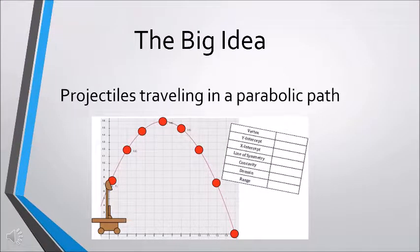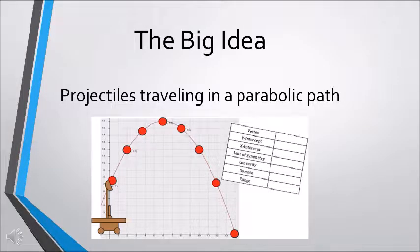The path of a projectile is important to understand. In sports, the path of shooting a basketball, throwing a football, or hitting a golf ball are some examples of how projectiles travel on a parabolic path. In this unit, students will write equations for the path of a cornhole bag.